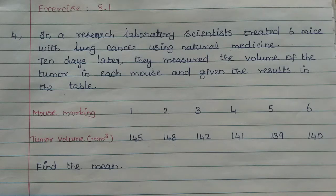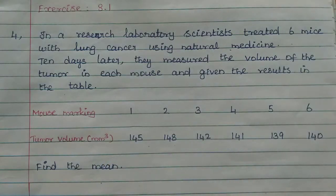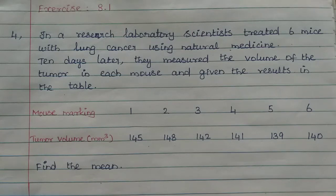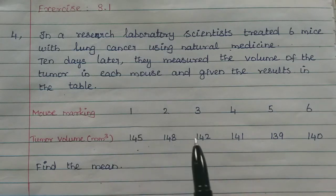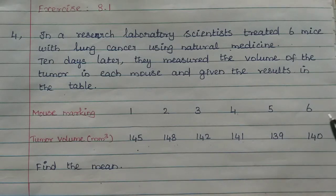Find the mean of the tumor volume size. What are we talking about? In a research laboratory, 6 mice with lung cancer were treated with natural medicine in the lab. After 10 days, they checked the tumor test results. First mouse is 145 mm cube, second mouse is 148, third mouse is 142, fourth mouse is 141, fifth mouse is 139, and sixth mouse is 140.